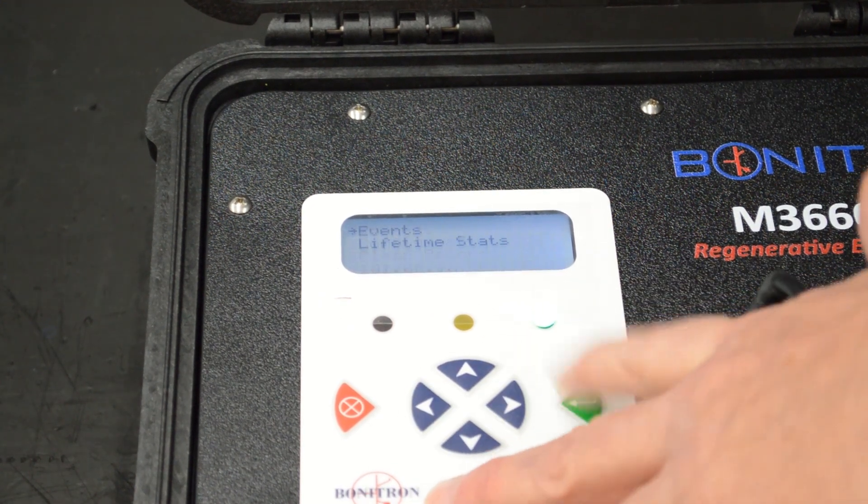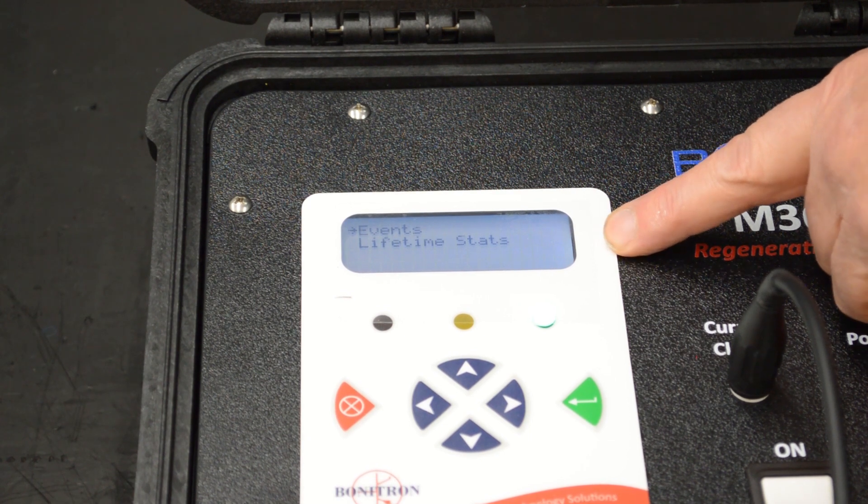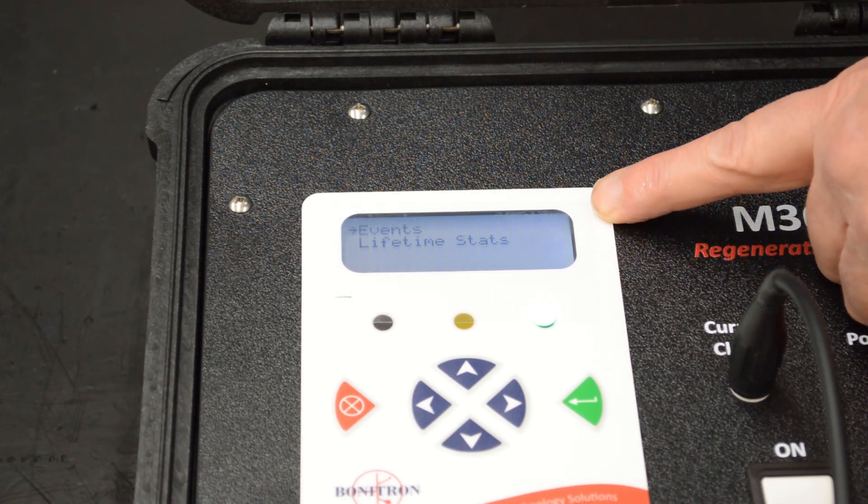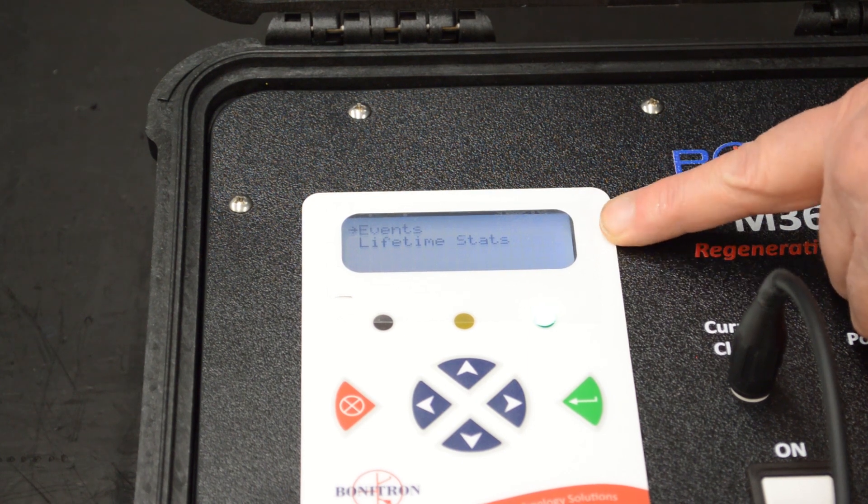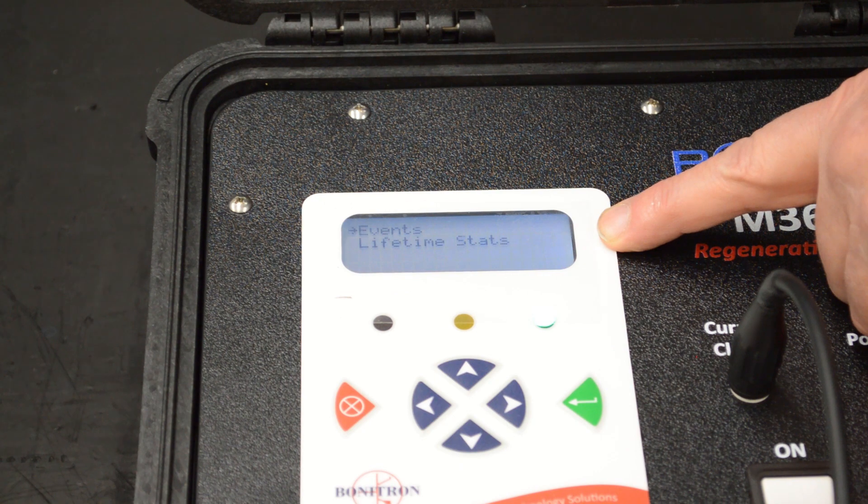So let's go to records. You have two menus in records. You have events and lifetime stats, and that's pretty much what I just explained. You can look at a single event or you can look at the cumulative regen for multiple events over a period of time.